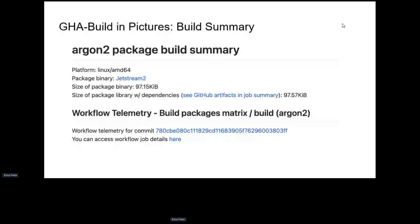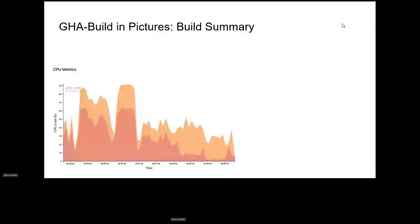After the build process, there's a summary of where the binary was put, the size of the library with its dependencies, and CPU, memory, and I/O metrics from when it built. This is all using a telemetry action created by someone else that we put in the GitHub Actions workflow.